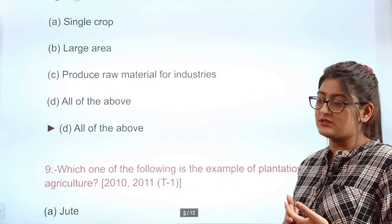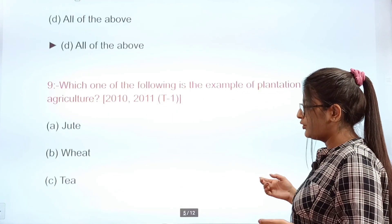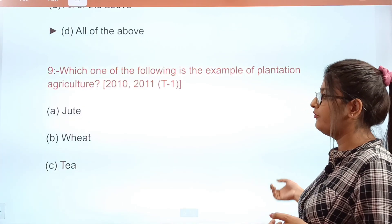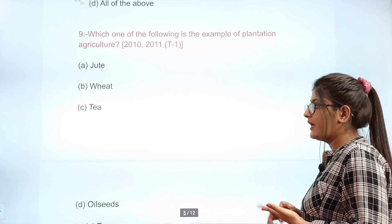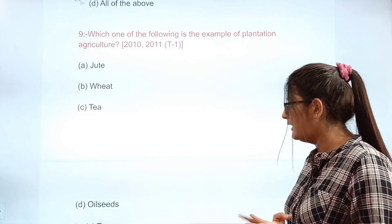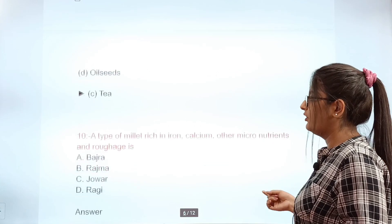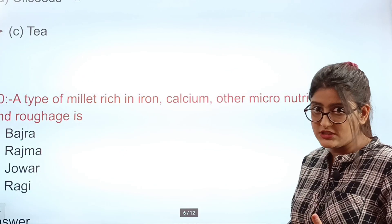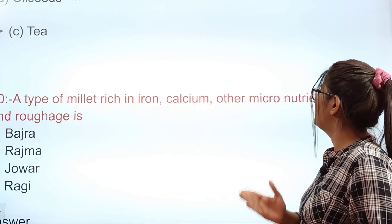Question: Which one of the following is an example of plantation? Options: A jute, B wheat, C tea, D oil. The correct answer is C — tea. Tea is a plantation crop.